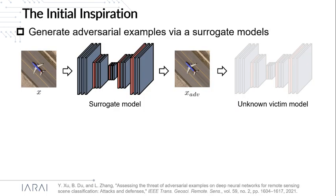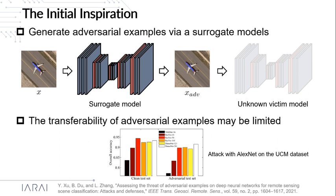To achieve this goal, one possible solution is to adopt a known deep neural network as the surrogate model to generate Adversarial Examples and attack the unknown victim model. However, it is found that the transferability of Adversarial Examples from a particular surrogate model may be very limited to other models. For example, Adversarial Examples generated by AlexNet may be less effective against other networks like ResNet and DenseNet, mainly due to the discrepancy in architecture between different networks.